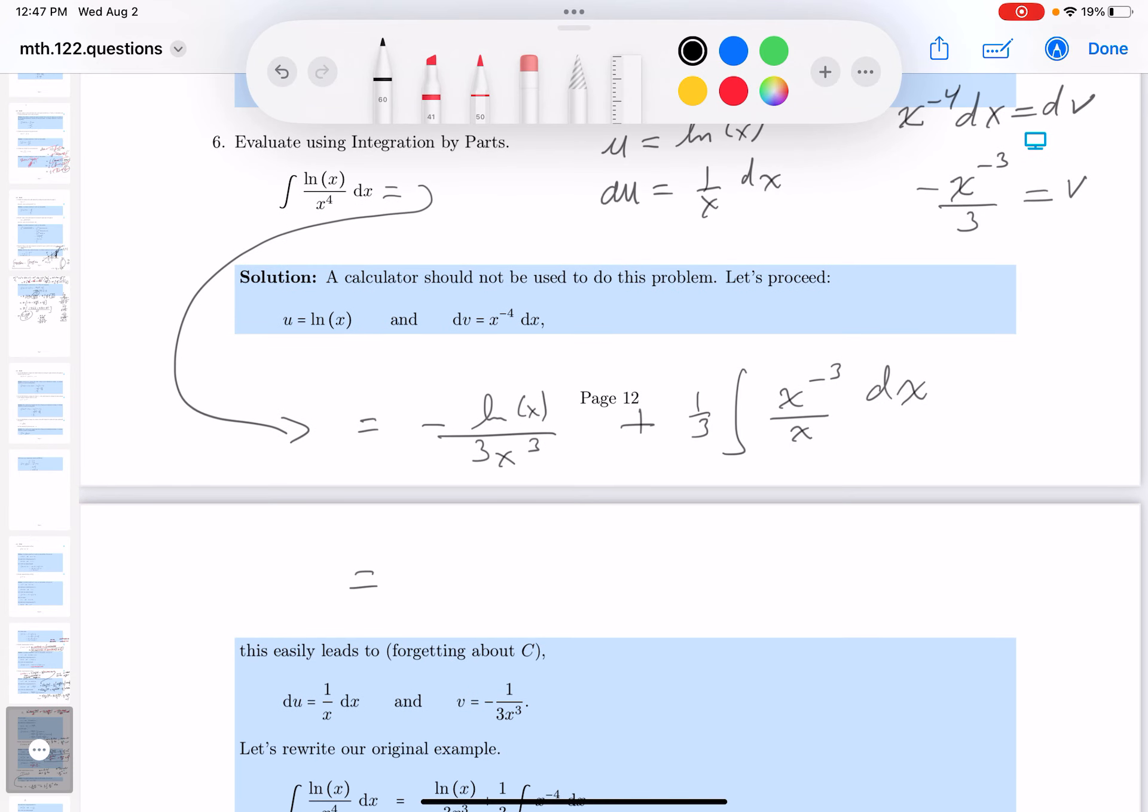This is minus ln x over 3 x cubed. I want to point out this over here is actually x to the minus 4. If you're to integrate that, you're going to add 1 to the exponent, which would make it minus 3, divide through by minus 3. What do you get? You get minus 9x to the minus 3. All right, there's already a 3 at the bottom, plus c. Let's put a box in this guy over here.